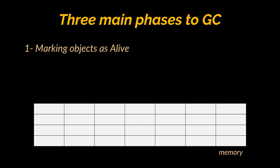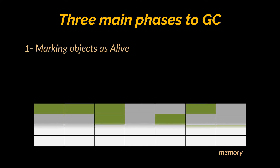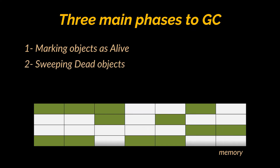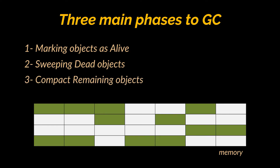To perform garbage collection, your implementation should include three main phases. First is marking objects as alive: the GC identifies all alive objects in memory by traversing the object graph. When the GC visits an object, it marks it as accessible and thus alive. All objects that are not reachable are considered candidates for garbage collection. The second phase is sweeping dead objects — after marking, the sweep phase releases the memory fragments which contain these dead objects.